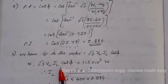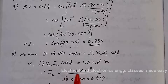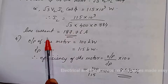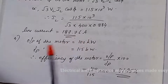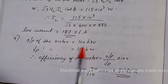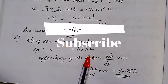Since the input = √3 × VL × IL × cos φ = 115 × 10³ watts, we can find the line current: IL = (115 × 10³) / (√3 × 400 × 0.884) = 187.76 ampere.